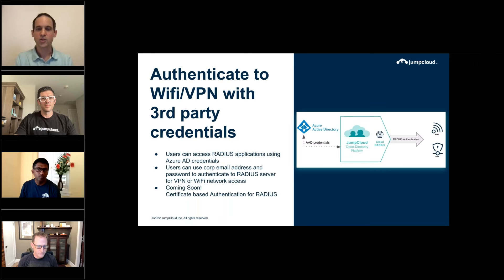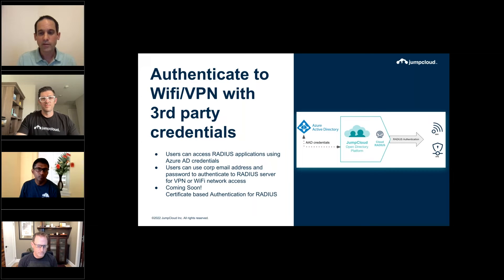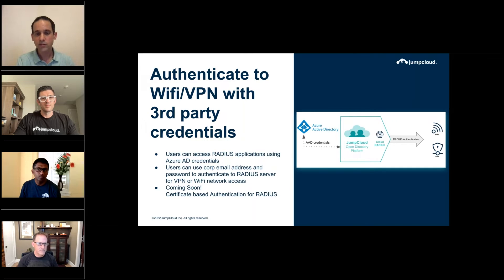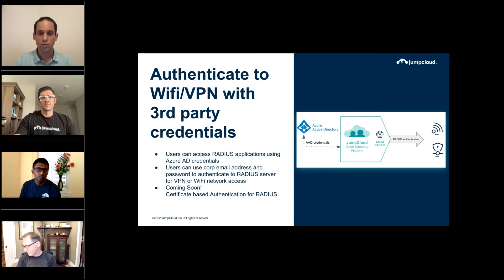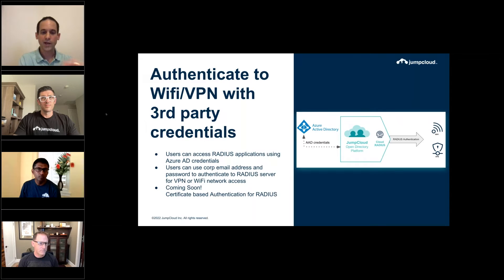Moving to the authentication and access management space — we're coming out in Q3 with the ability to add more authentication options to more environments. One is the ability to authenticate to RADIUS environments with third-party credentials. The first capability we're releasing is authenticating to RADIUS endpoints with Azure AD credentials — for use cases like Wi-Fi in office or VPN that specifically require Azure AD credentials.